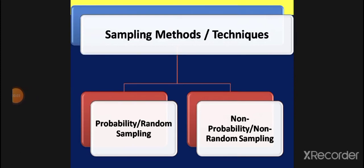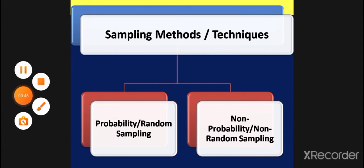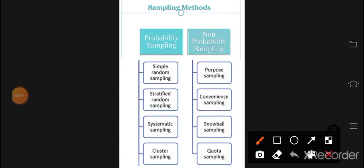Assalamualaikum. We started sampling. There are two types: probability sampling and non-probability sampling. In probability sampling, also called random sampling, everyone has equal chances. In non-probability sampling, we don't have equal chances because certain groups are predetermined — for example, males above 60 years are excluded. There are four types of probability sampling and four types of non-probability sampling.